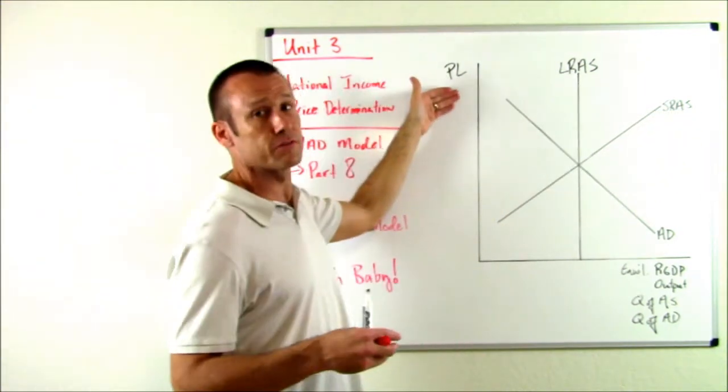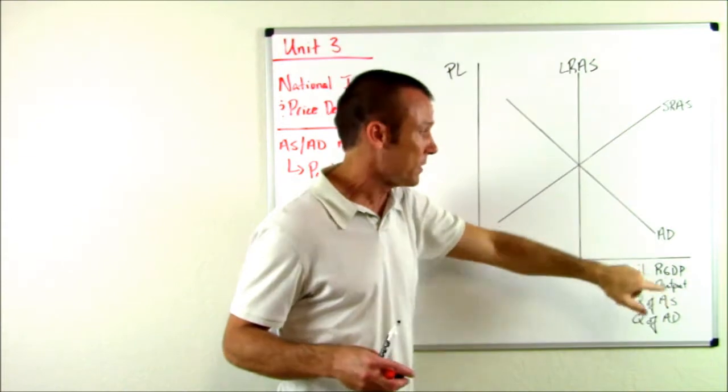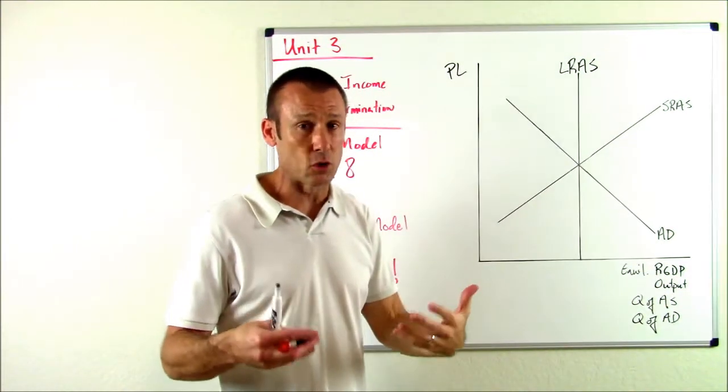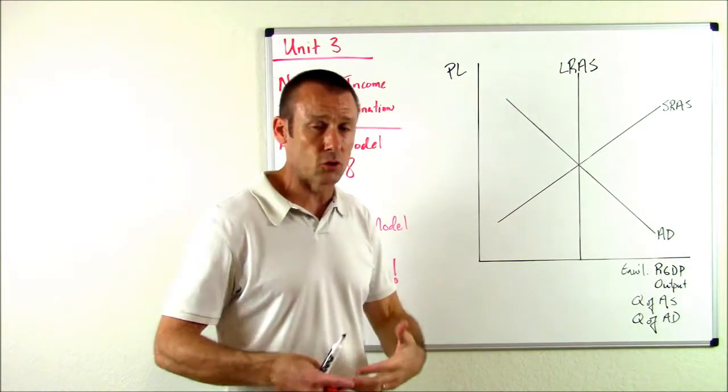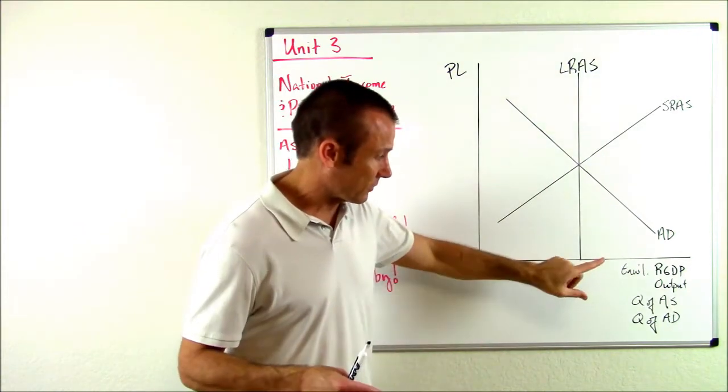However, in the short run, total production does vary with the price level, but only in the short run. AD, of course our demand, total spending, also varies with the price level. It varies inversely with the price level.